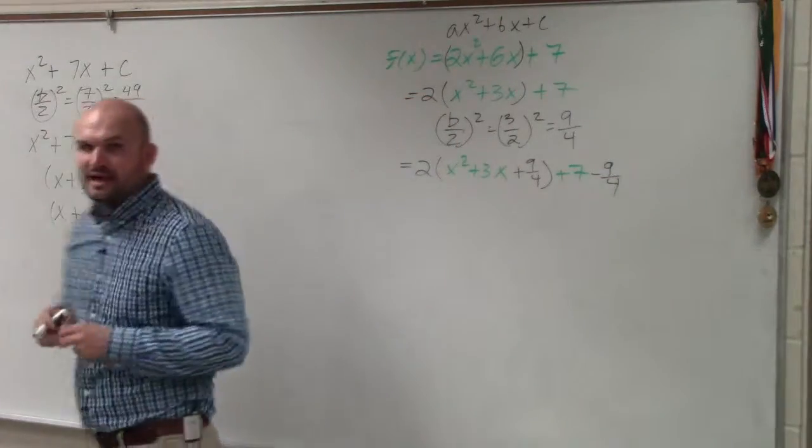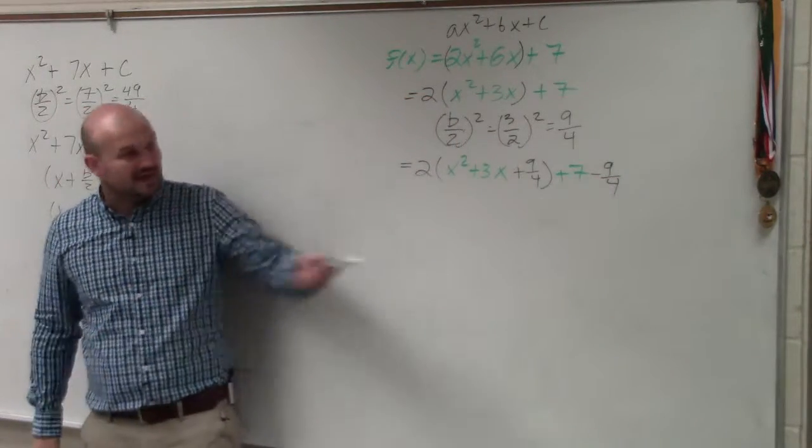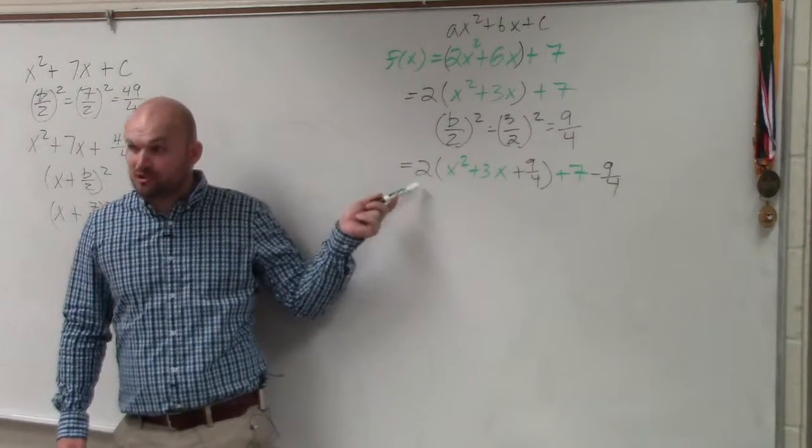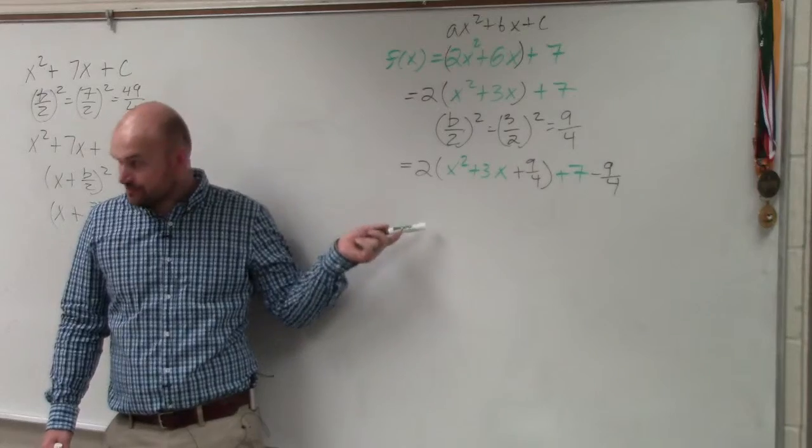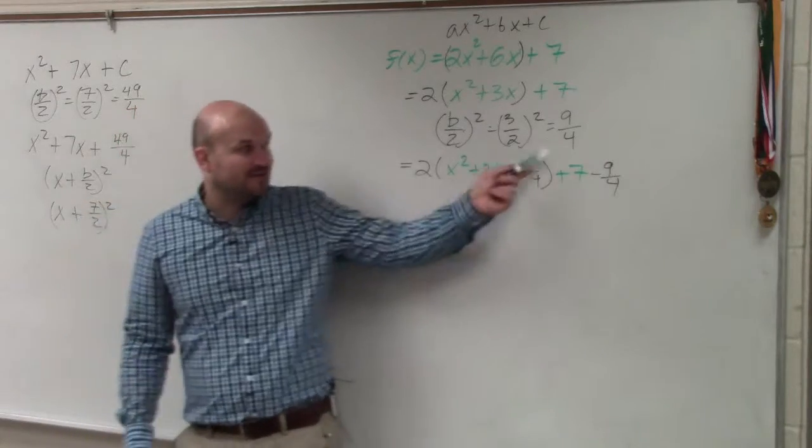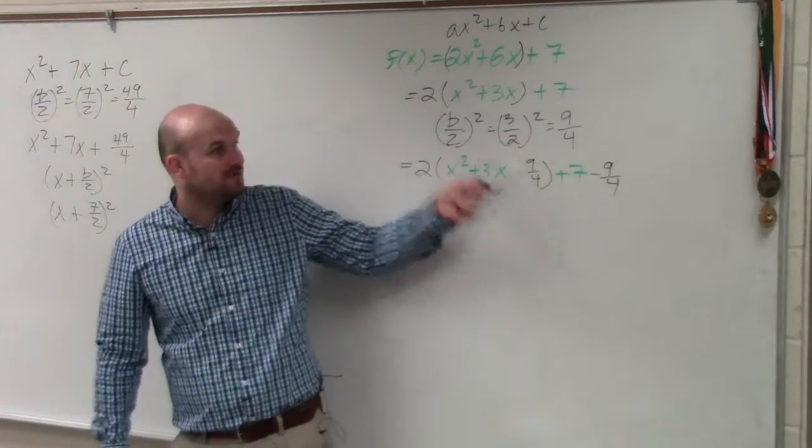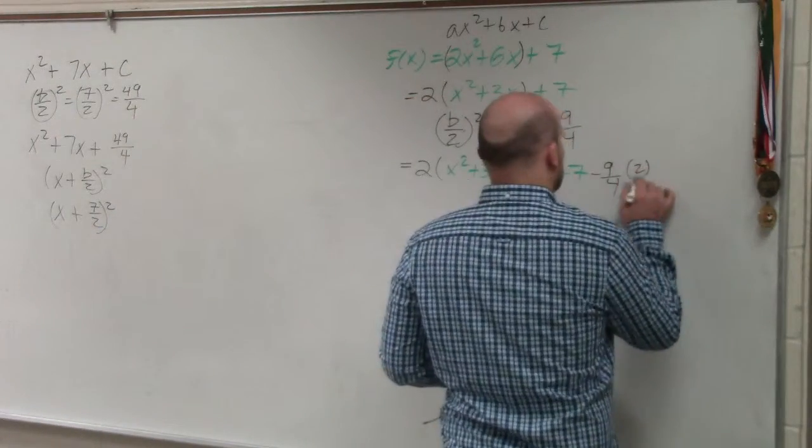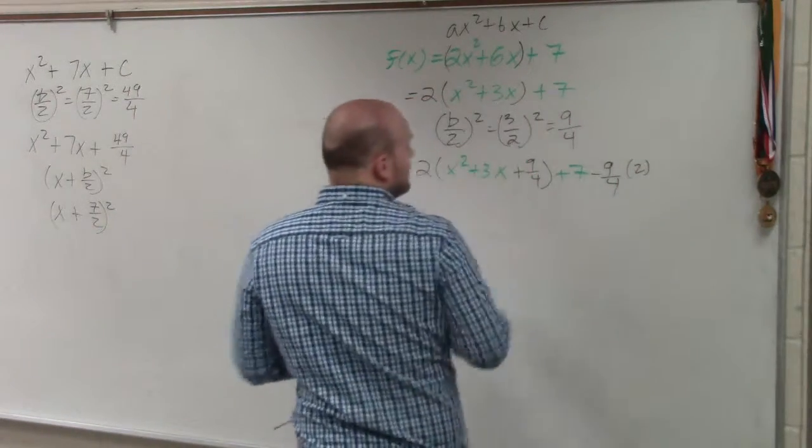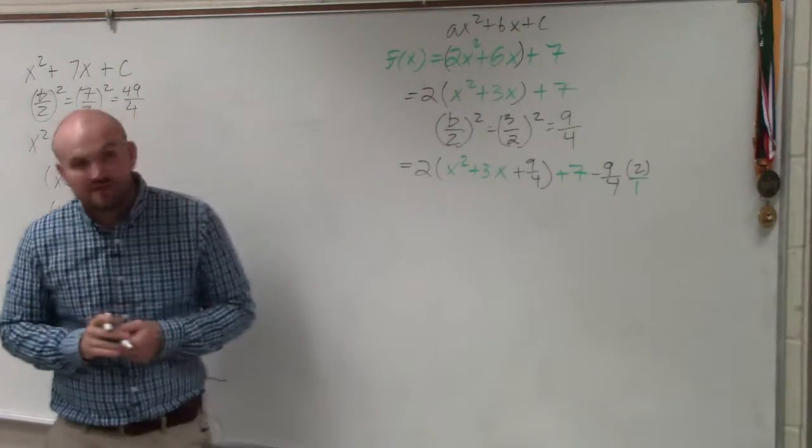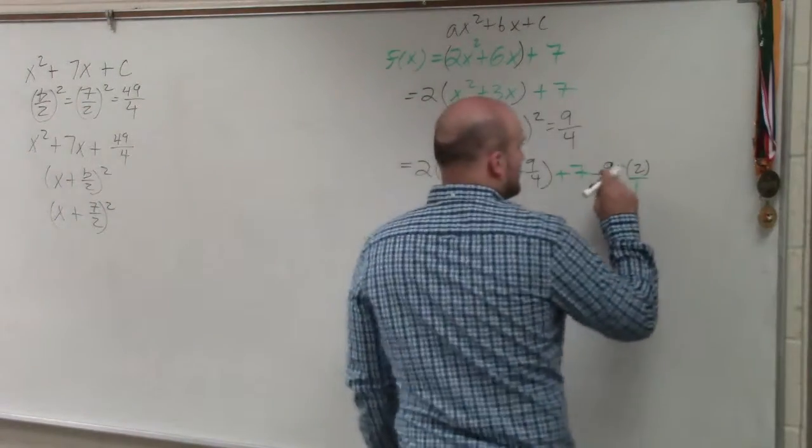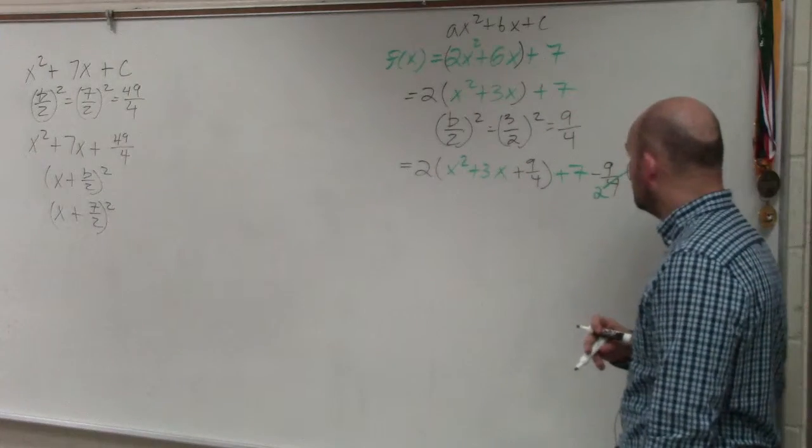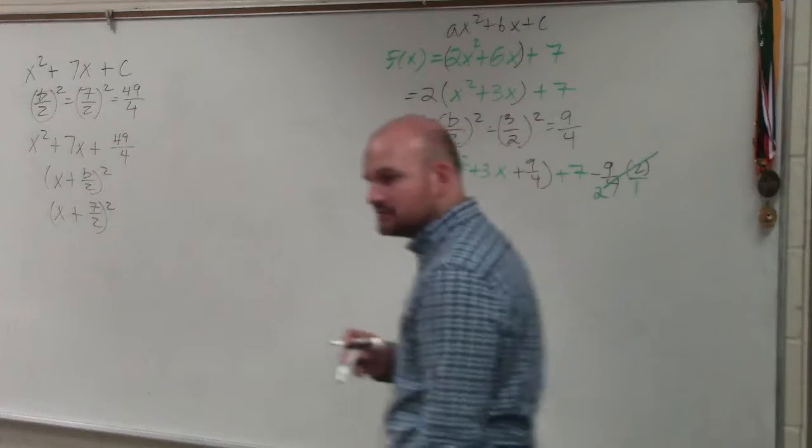And then the other part that got pretty confusing, I'm not really adding 9 fourths inside this parentheses. I'm adding a 9 fourths that's being multiplied by 2. Do you guys agree with me? So in reality, if I'm adding and subtracting, if I add 9 fourths being multiplied by 2, I have to subtract a 9 fourths that's being multiplied by 2. And in reality, you can rewrite that as a fraction. So therefore, that can be reduced to 9 halves, because 2 divided by 4 can reduce to 1 over 2.